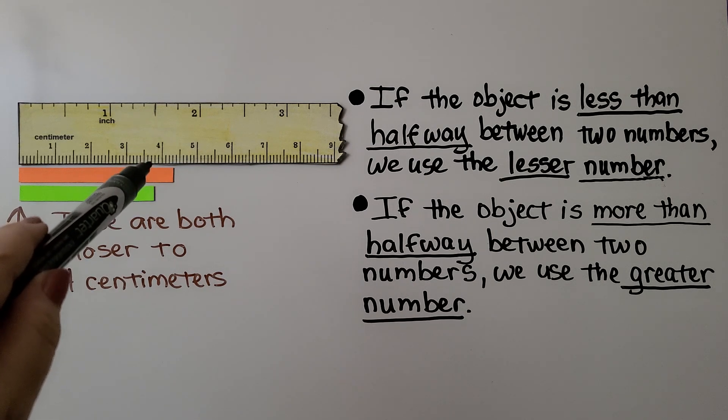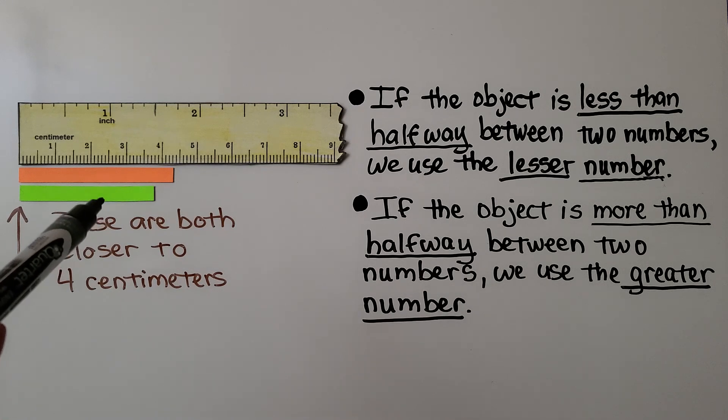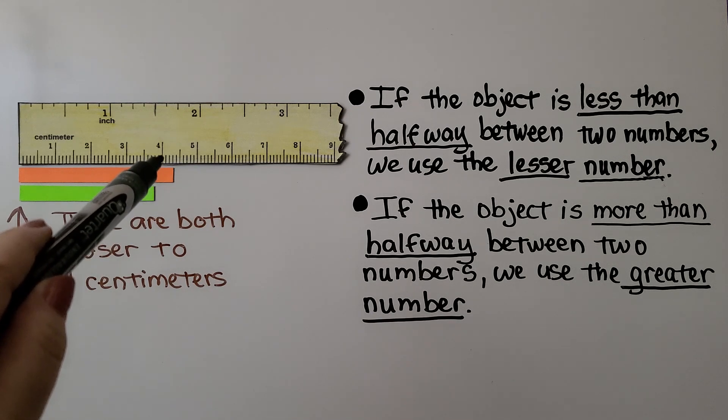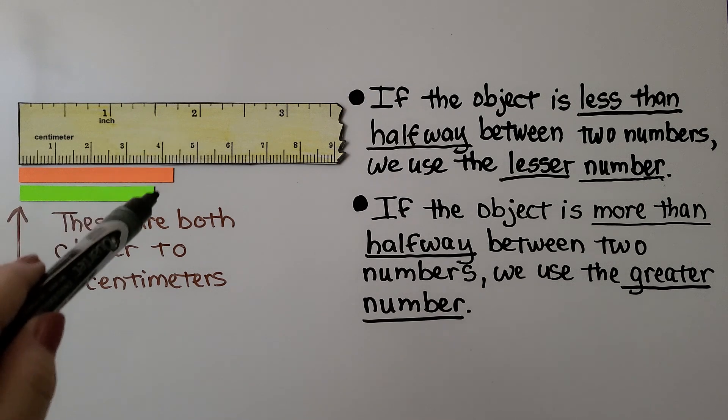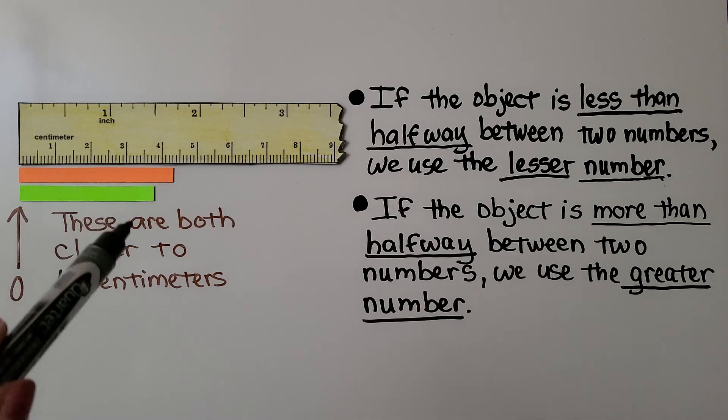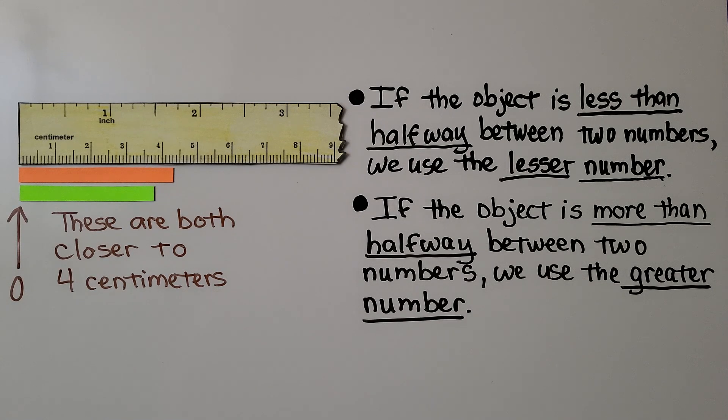And if you look at the green one, the green one is not quite at 4, but it's way past the halfway mark for 3, so it's closer to 4. So even though these are two different lengths, to the nearest centimeter they're both 4.